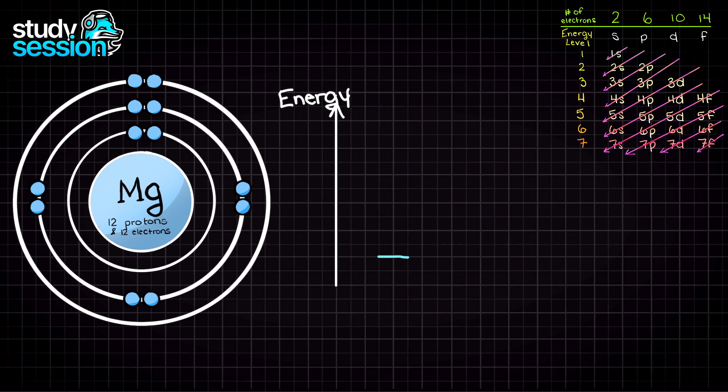As always, begin with the 1s subshell, and as we discussed before, the 1s subshell can hold 2 electrons. This leaves us with 10 electrons. Next, following our energy diagram arrows, we have the 2s subshell, which again can take 2 electrons.